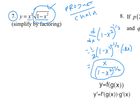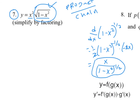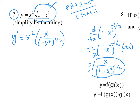Now doing the product rule: y prime equals the first times the derivative of the second — which I already computed — giving x over the square root of (1 minus x squared), plus the second, which is the square root of (1 minus x squared), times the derivative of the first, which is 2x. There is also a negative that I need to include there.